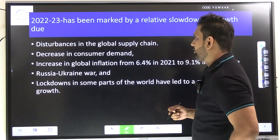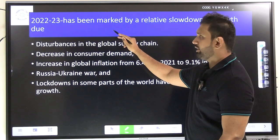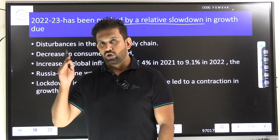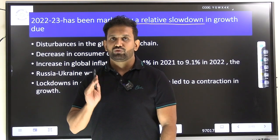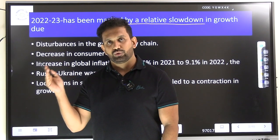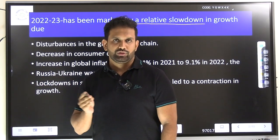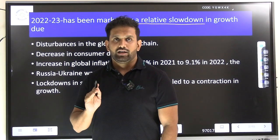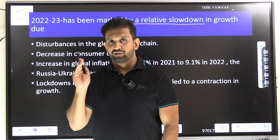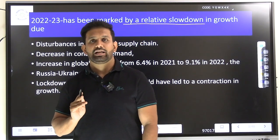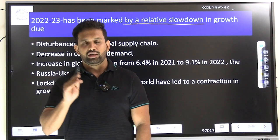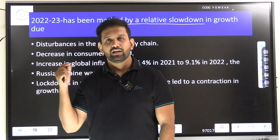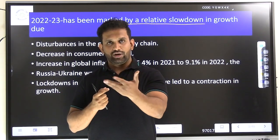The introduction in the economic survey clearly states that 2022 to 2023 has been marked by a relative slowdown in growth, because the impact of COVID has not been completely eliminated. The slowdown seen in 2021 to 2022 also continued in 2022 to 2023. Apart from COVID, there was also Russia's invasion of Ukraine, which disrupted the global supply chain. Countries import semiconductor chips from Taiwan and China.